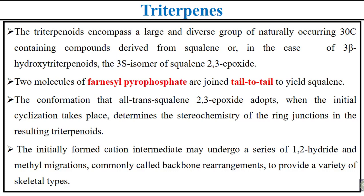Two molecules of farnesyl pyrophosphate are joined together, linked tail-to-tail, to yield squalene. The conformation that all-trans squalene 2,3-epoxide adopts when initial cyclization takes place determines the stereochemistry of the ring junctions in the resulting triterpenoids. These triterpenoids are composed of six isoprene molecules.